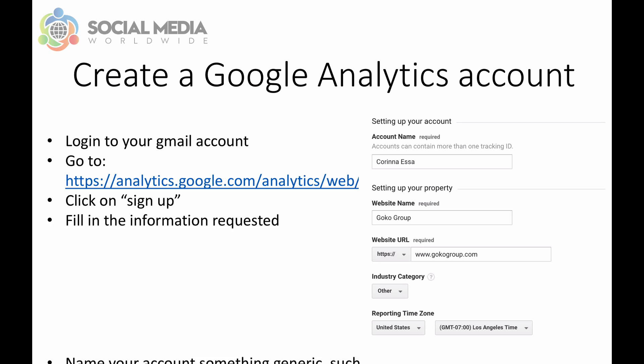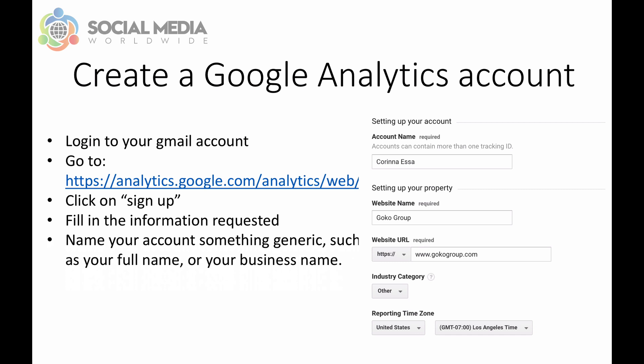It will ask you whether you want to track a website or a mobile app, so make sure you choose accordingly. Then name your account — since you can track multiple websites on one Google Analytics account, you can name your account something generic such as your full name or your business name. Then name the website you will be tracking. So if your website was gocogroup.com, under website name you would put gocogroup. Then add the website URL you want to track and from the drop-down menu select the industry this website is in.